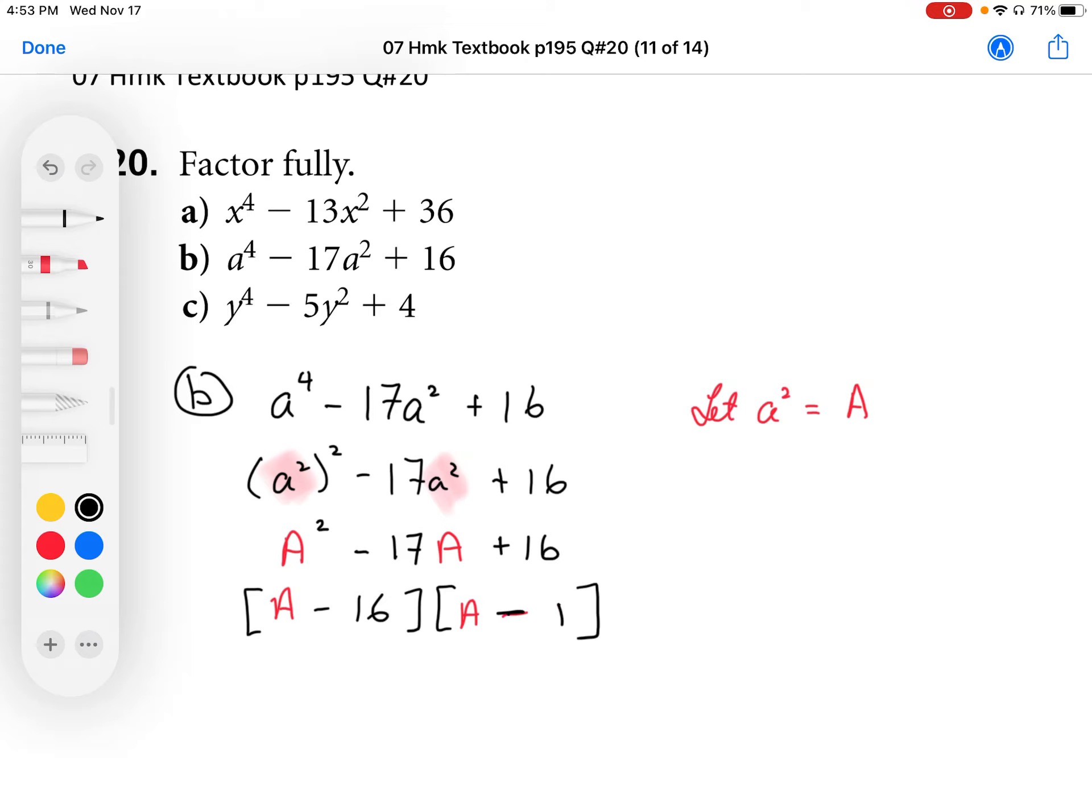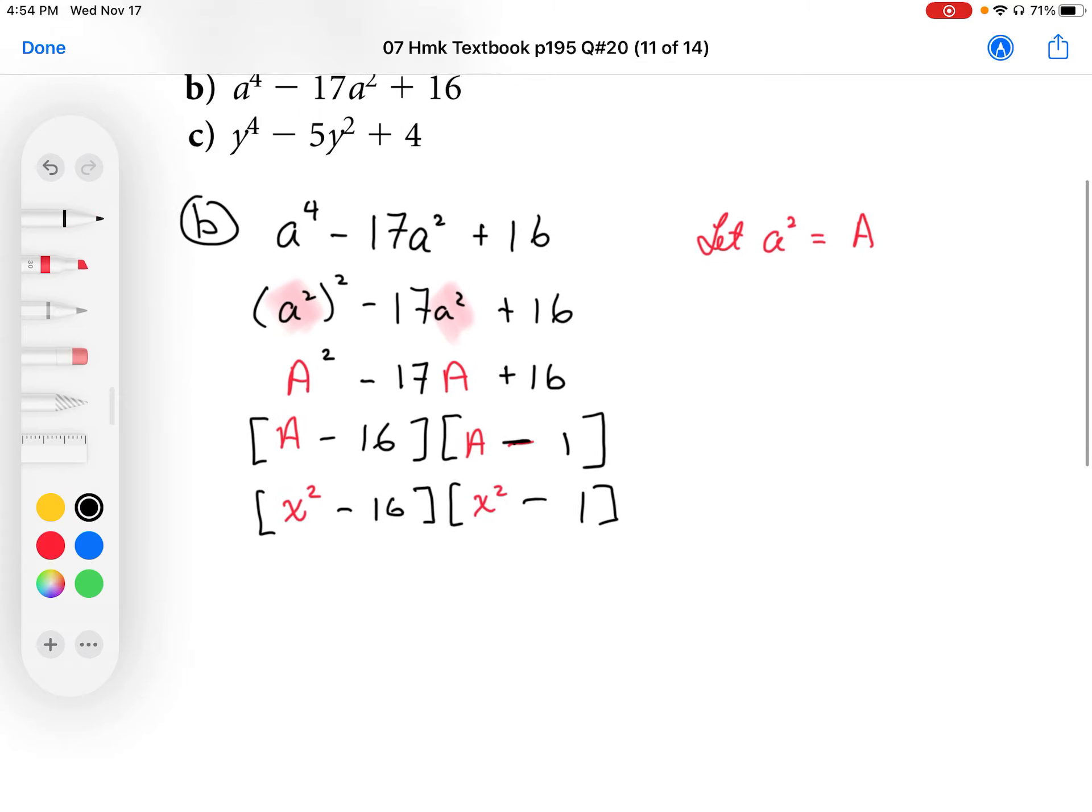So this is really not A, but we're going to back substitute. This is really x squared, so we're going to write the x squared in here. Instead of A, we're going to replace that back with x squared. And we end up with x squared minus 16, that is further factorable, and we end up with x squared minus 1, which again is also further factorable.